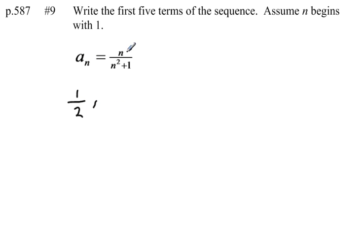To find our second term, we can plug a 2 in place of n. That would give us 2 over 2 squared, which is 4, plus 1, is 5.